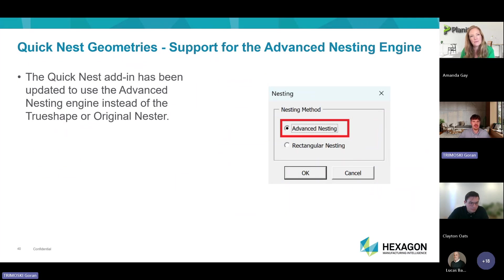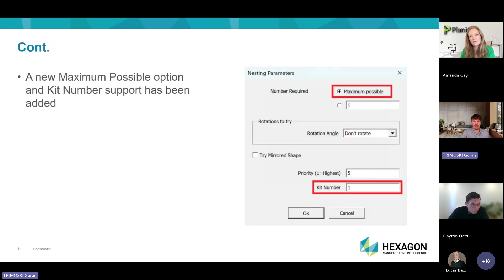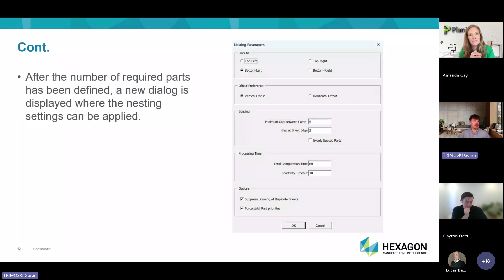In the quick nest geometries command, we removed true shape and original nesting and added advanced nesting. This provides a completely different nesting approach and also gives the ability to create a maximum possible number of parts — so you can tell it to put the maximum possible number of part A on a sheet and it will do that. You can also control the kit number for those parts. Afterward, it takes you to the nesting parameters screen where you set starting position, gaps between parts, and processing time — the same window you've seen before, appearing after the previous two steps.